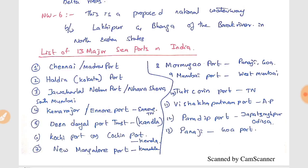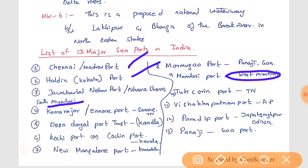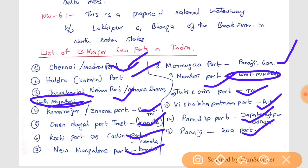The 13 major seaports include: Chennai port, Haldia port, and in Mumbai there are two ports — Mumbai port and Jawaharlal Nehru Port (also called Nhava Sheva port). Moving down the west coast: Mormugao and Panaji ports in Goa, Mangalore port, Kochi port. On the east coast: Tuticorin and Ennore ports in Tamil Nadu, Chennai port, Visakhapatnam port in Andhra Pradesh, Paradip port in Odisha, and Deendayal port in Kandla.